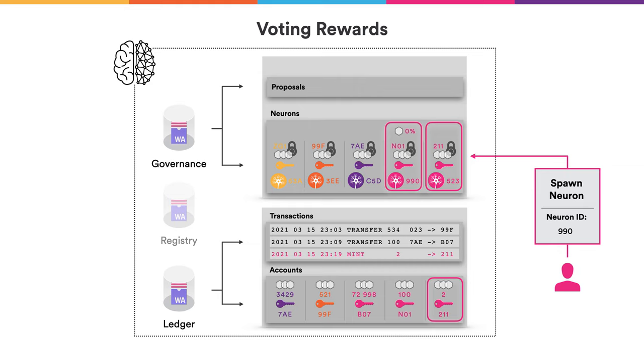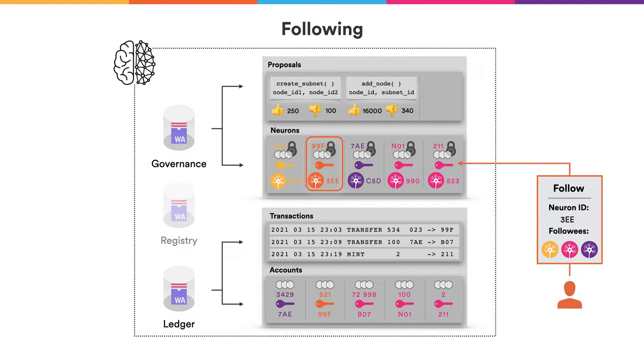This new neuron has a small dissolve delay, meaning very soon the user is able to unlock the tokens and use them freely. Now, voters want to participate in voting because they get voting rewards. However, a user might not have time to participate in all decisions, or might not feel comfortable making certain decisions. Therefore, the internet computer facilitates liquid democracy: a neuron can specify that it would like to follow some other neurons, called followees, and whenever a majority of the followees send the same vote, the governance canister will automatically cast that vote for the follower neuron.